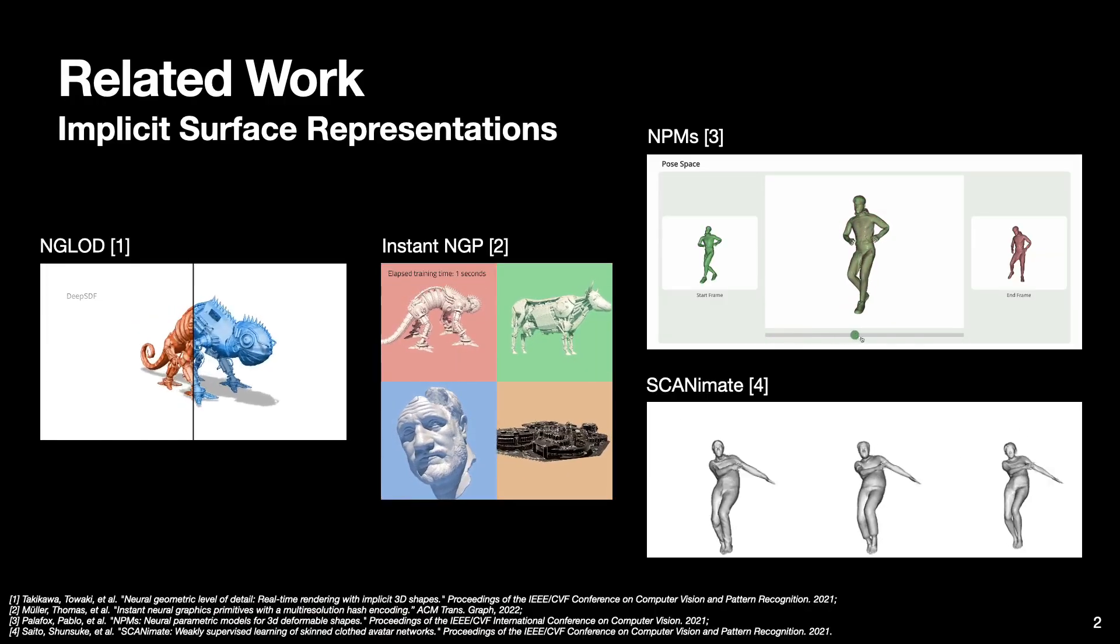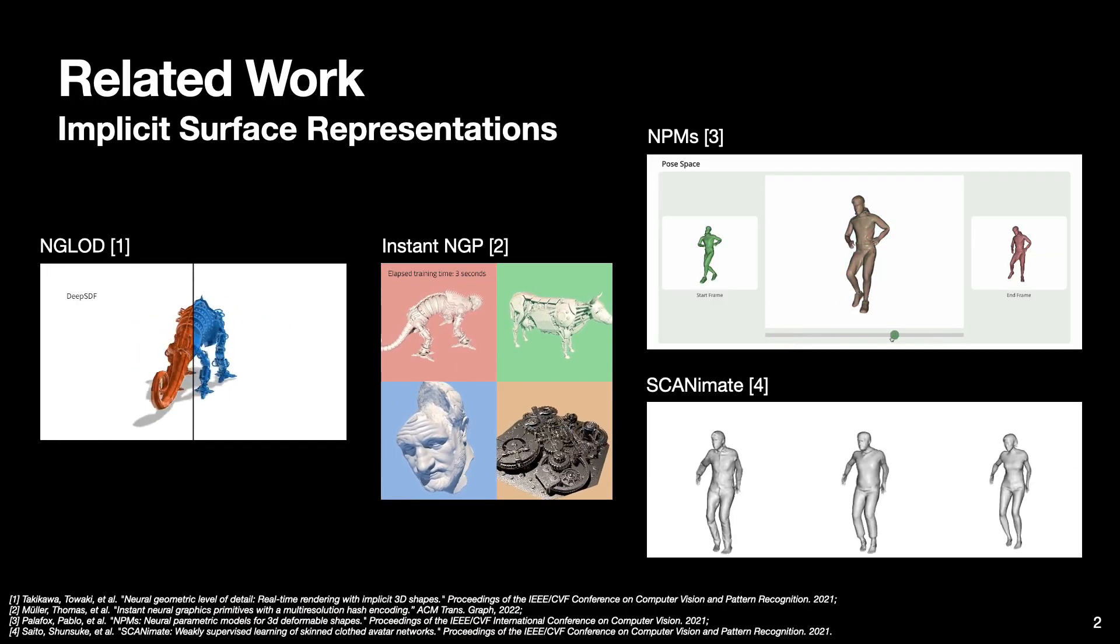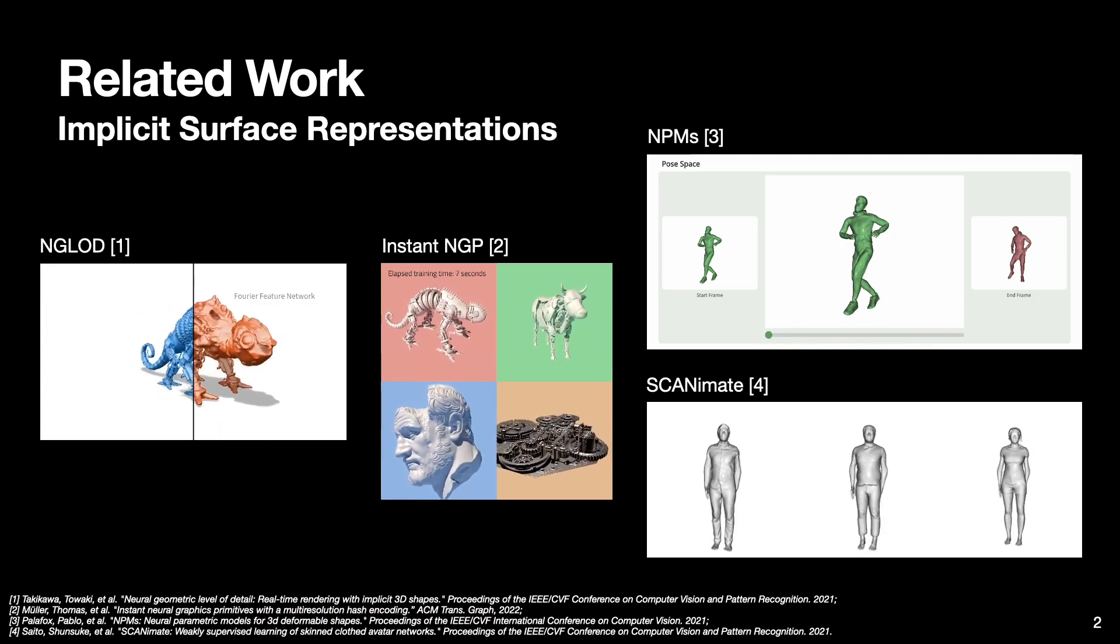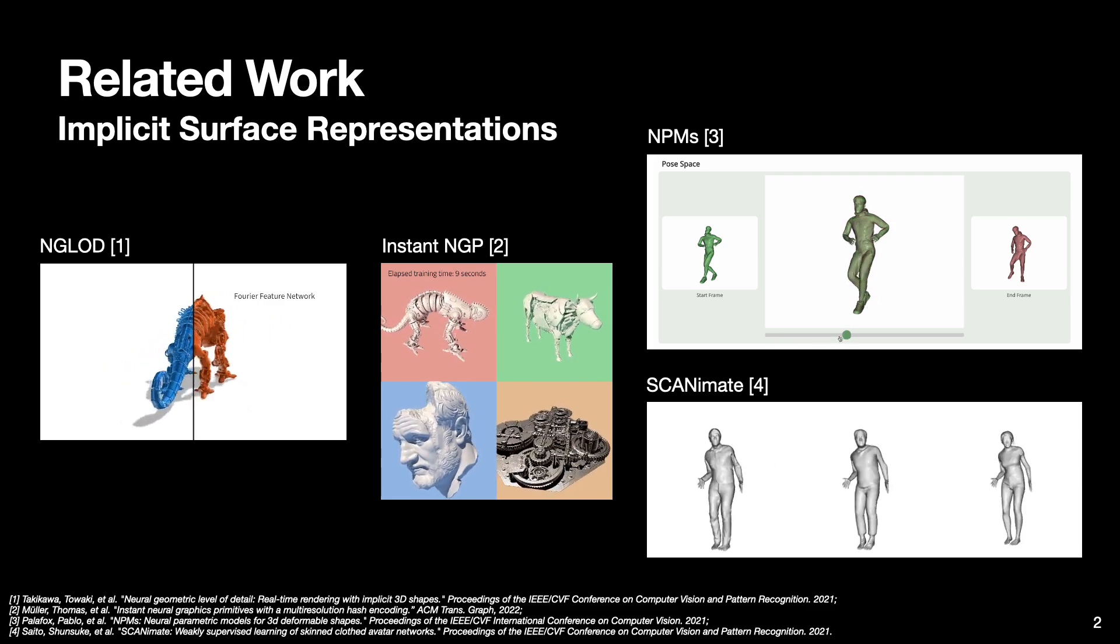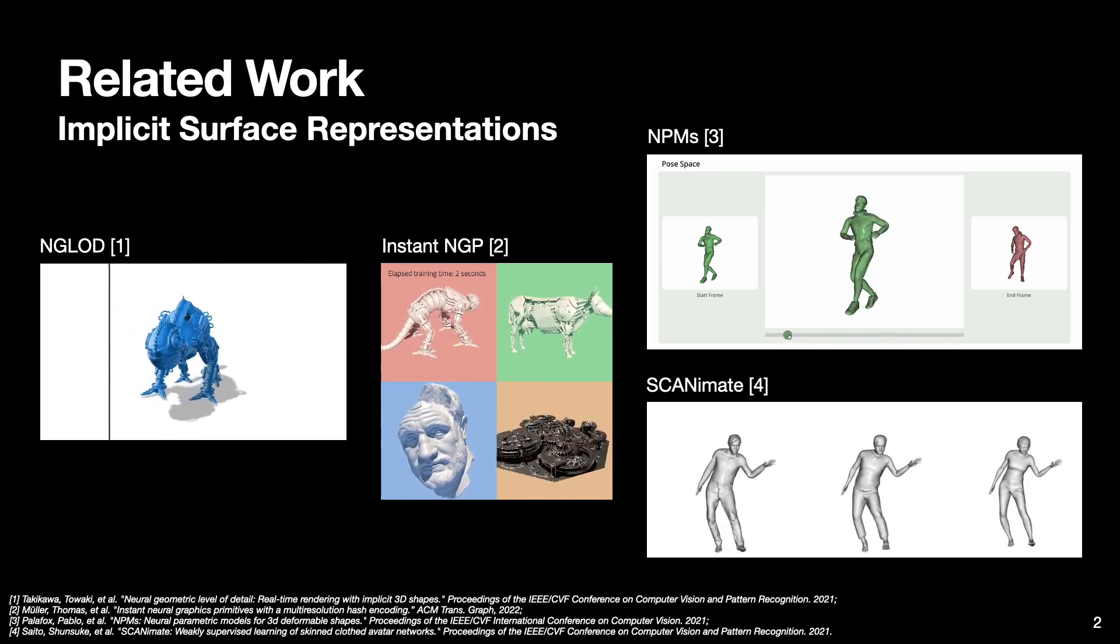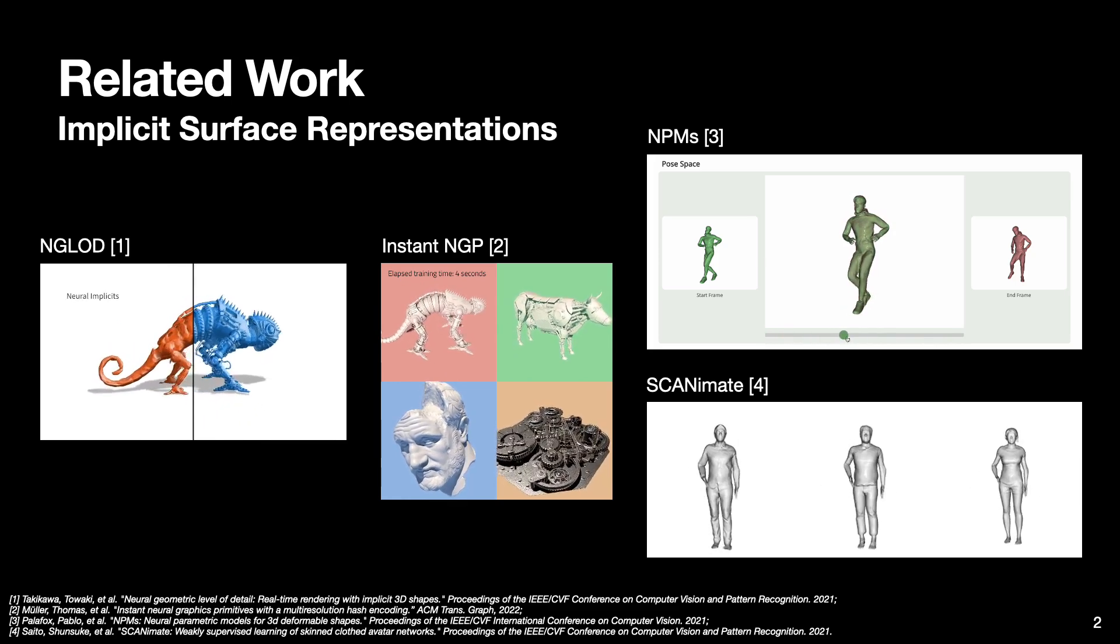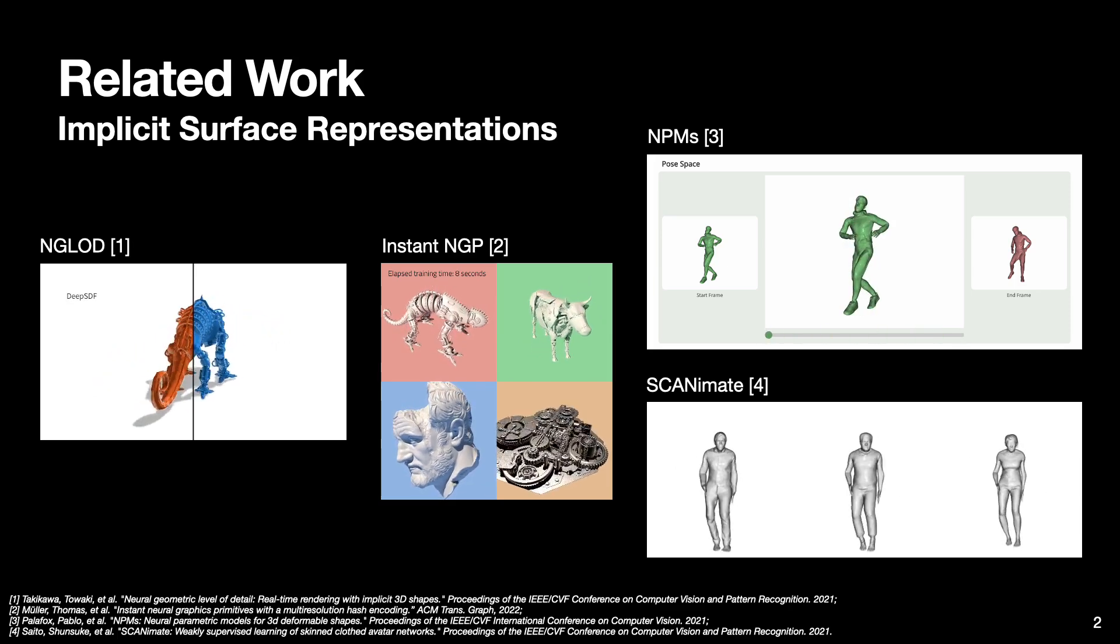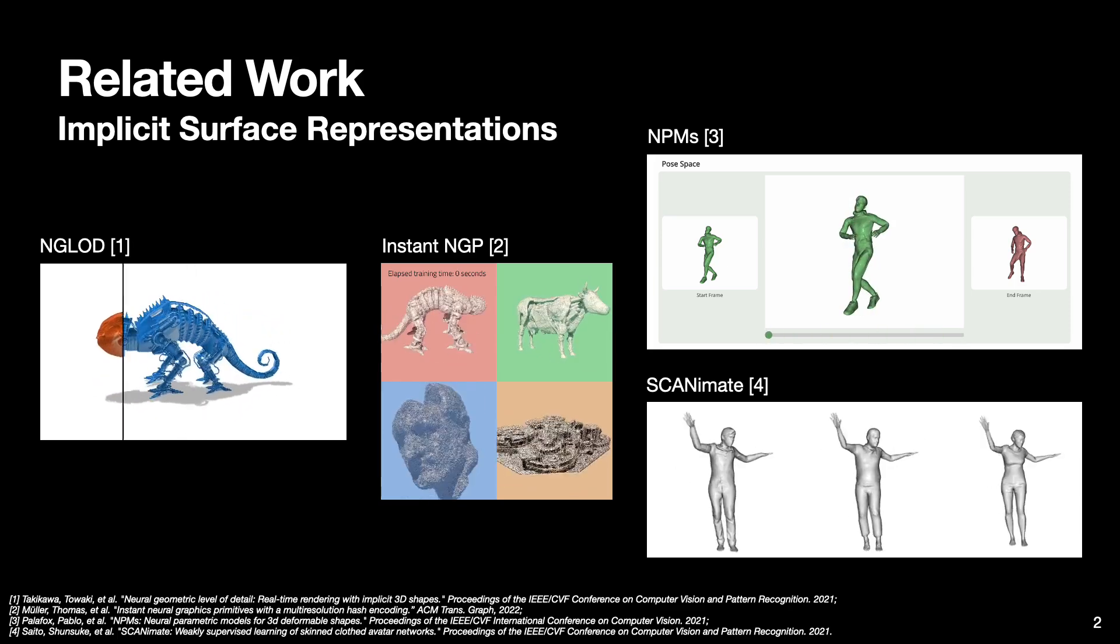Recent years have been marked by significant progress in the field of neural 3D scene modeling and reconstruction. Currently, the best performing methods for surface modeling rely on implicit representations combined with auxiliary data structures like octrees or hash maps. A number of works have also explored the applicability of implicit models for modeling dynamic surfaces.